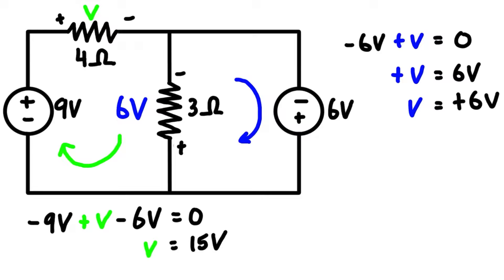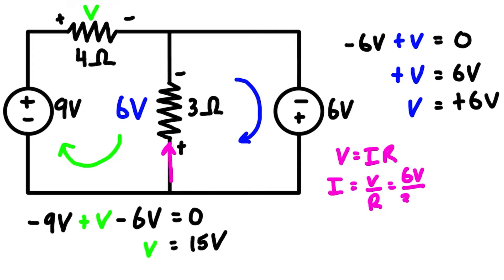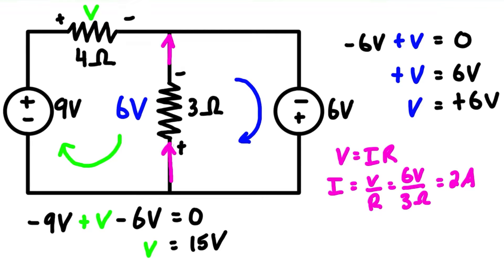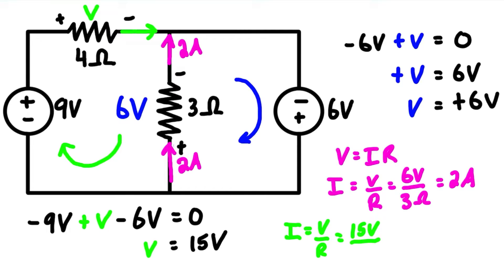We've solved for the voltage drop across both resistors. To verify, we can check the junctions using Kirchhoff's current law. Using Ohm's law rearranged as I equals V over R: the branch with the three-ohm resistor has a six-volt drop, giving a current of two amps flowing upward from positive to negative. We can label that as two amps entering the junction. For the four-ohm resistor, 15 volts divided by four ohms gives 3.75 amps, which we label coming into that node as well.